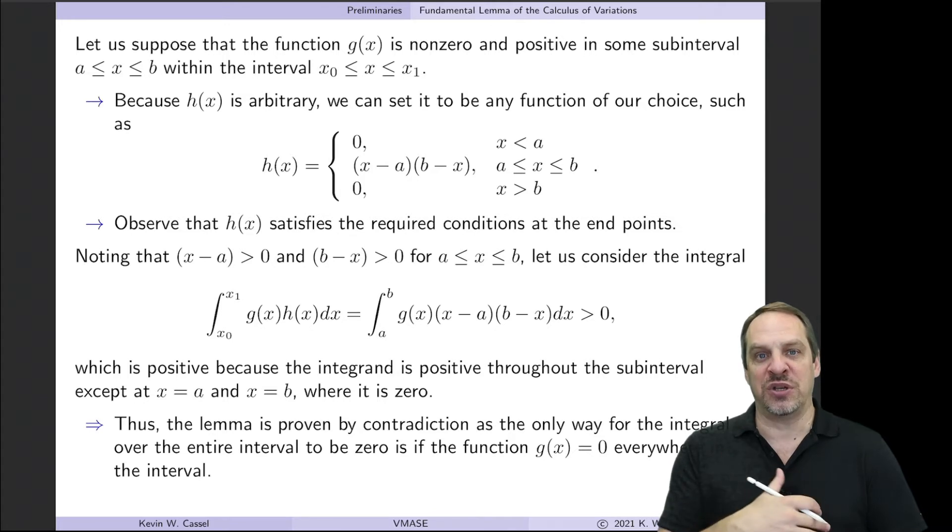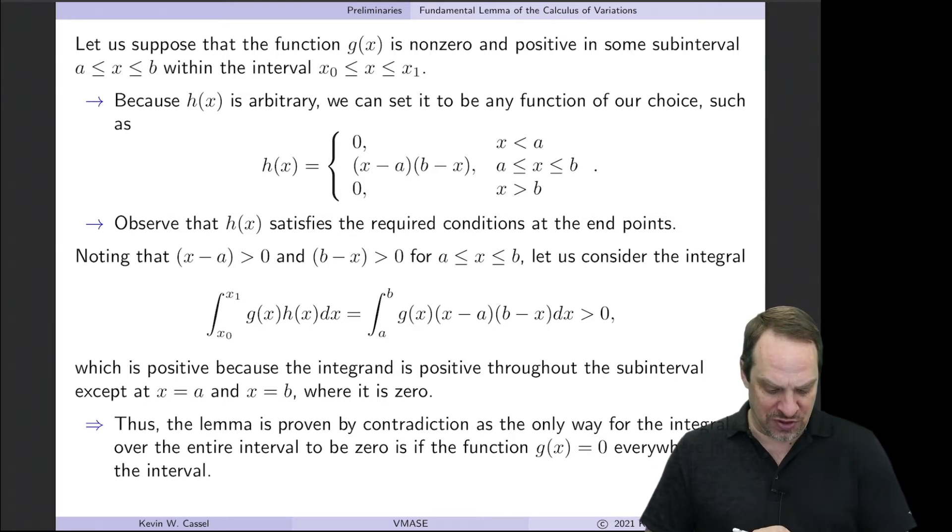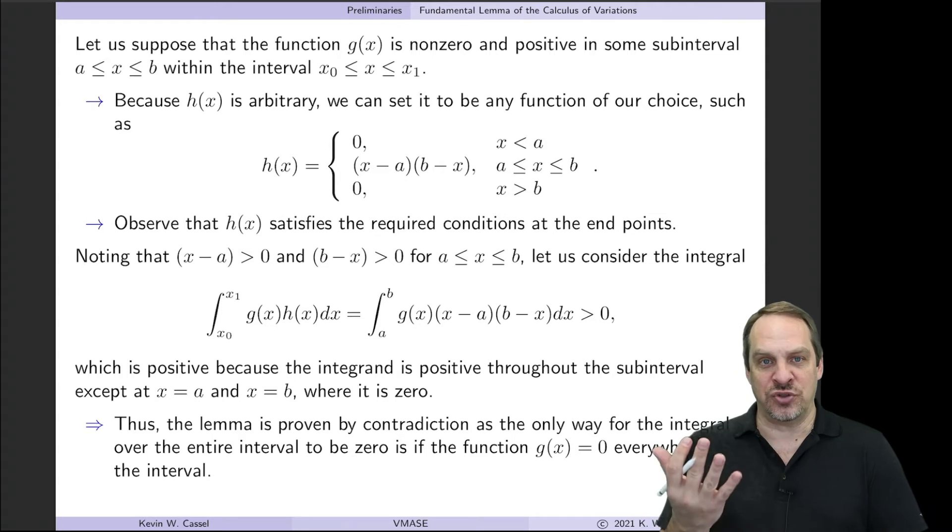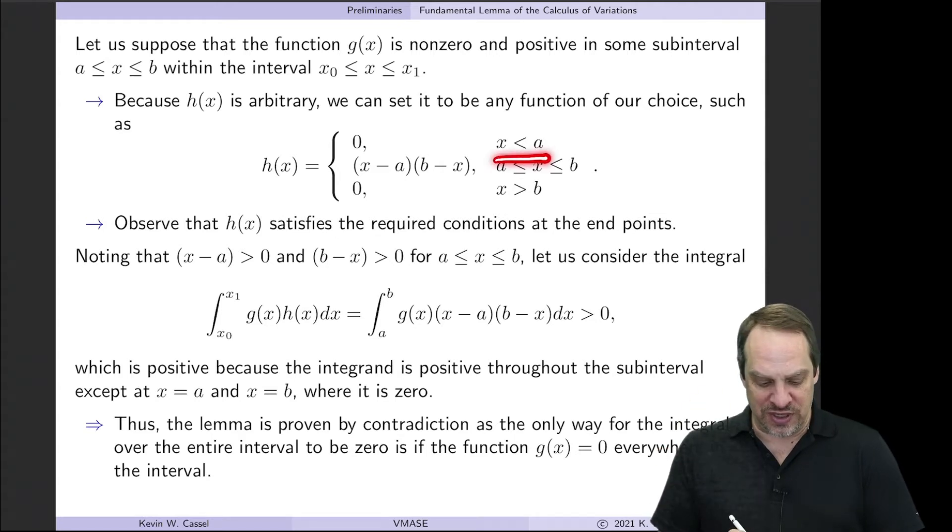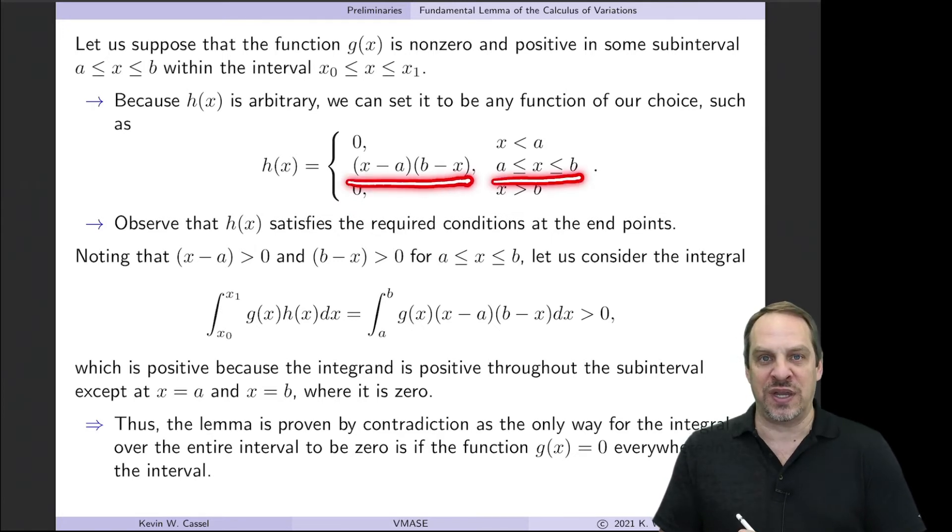It has to be continuous, but it can be any function between x0 and x1. If it's arbitrary, I can choose it to be whatever I want. So let's choose it such that for x less than a, h is 0. For x greater than b, it's also equal to 0. And it's only in this interval from a to b that has non-zero values, (x-a) times (b-x).